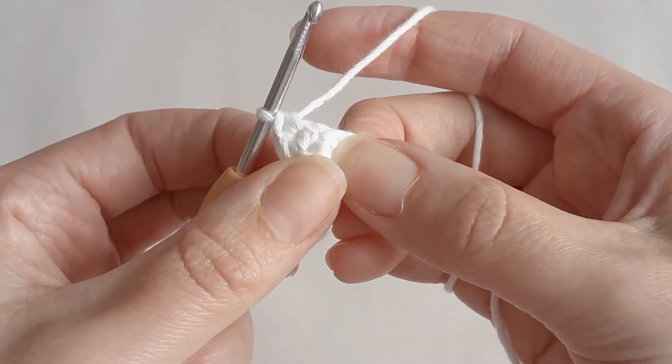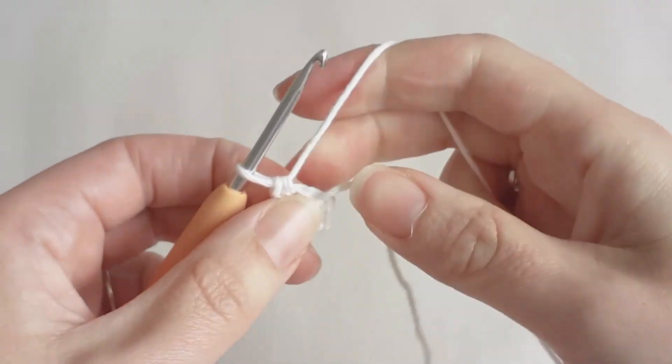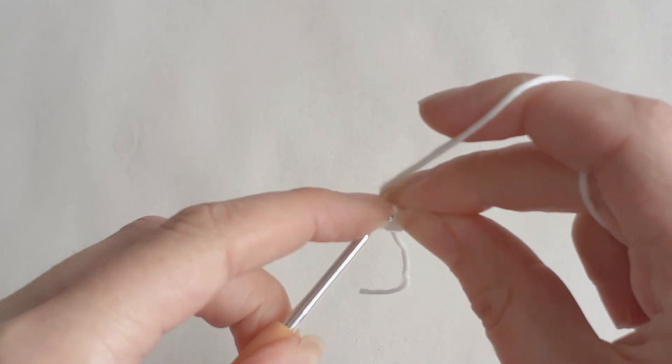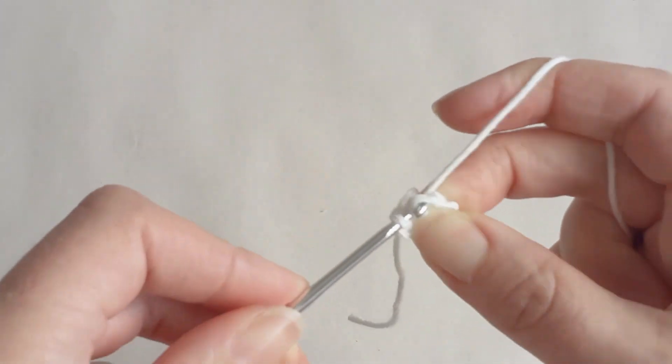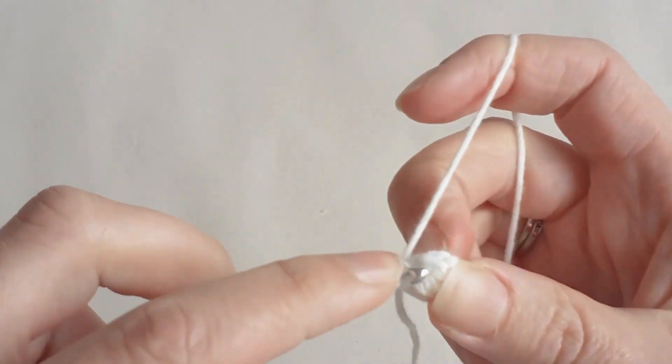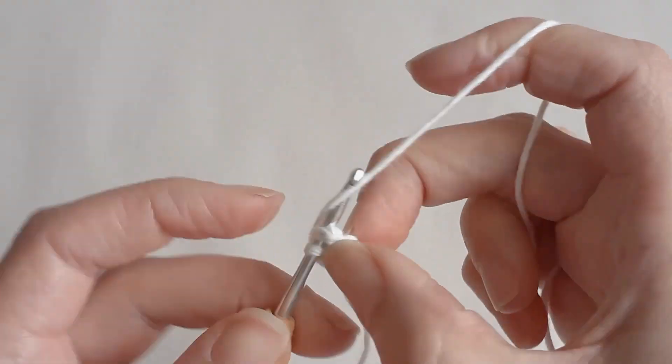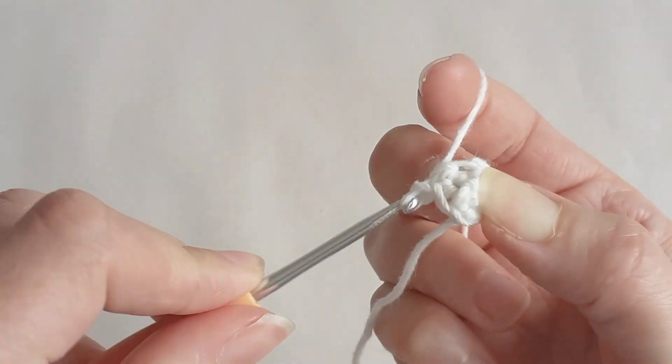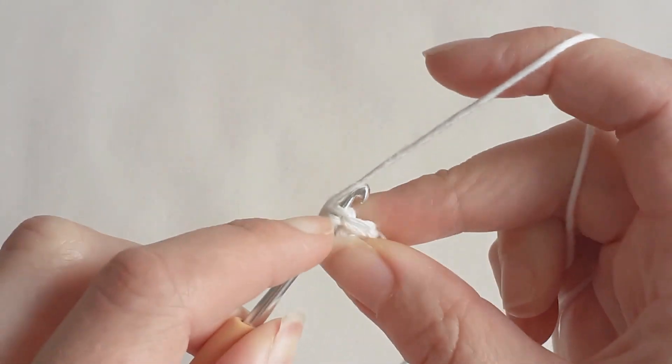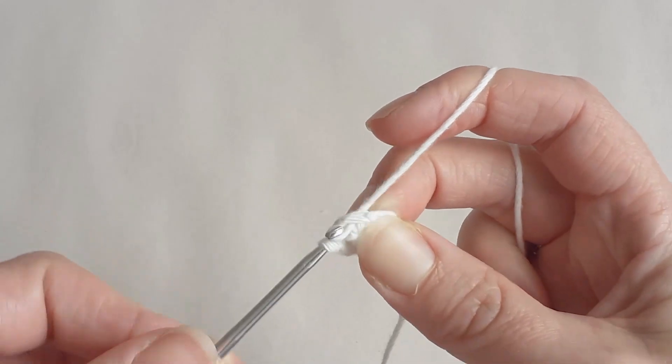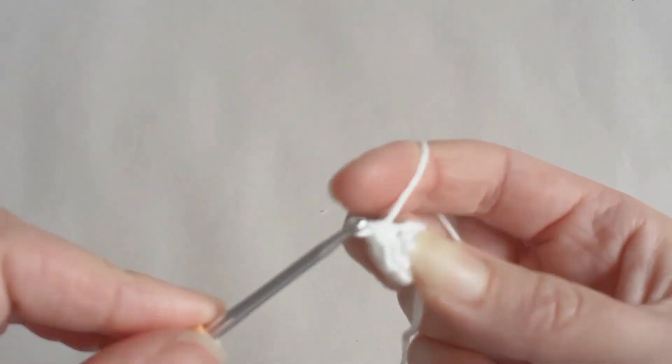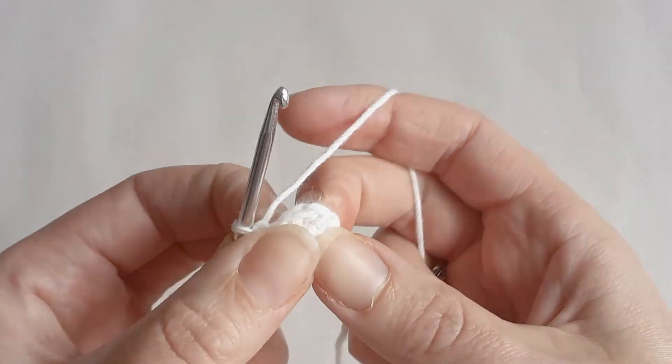You should have six single crochets around, and the next row we're going to increase to eight. So I'm going to do two single crochets, one in the first stitch, one in the second stitch, next I'm going to put an increase, and then I'm going to repeat that again: two single crochets and an increase.